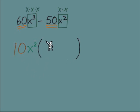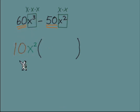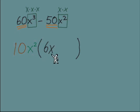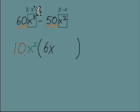Think of it like distributing: if we take 10x² and multiply it by the first term inside, what do we need so that multiplication equals 60x³? Think about numbers first, then variables. 10 times what gives us 60? And x² times how many more x's gives us x³? One more x. So 10 times 6 is 60, and x² times one more x gives us x³.